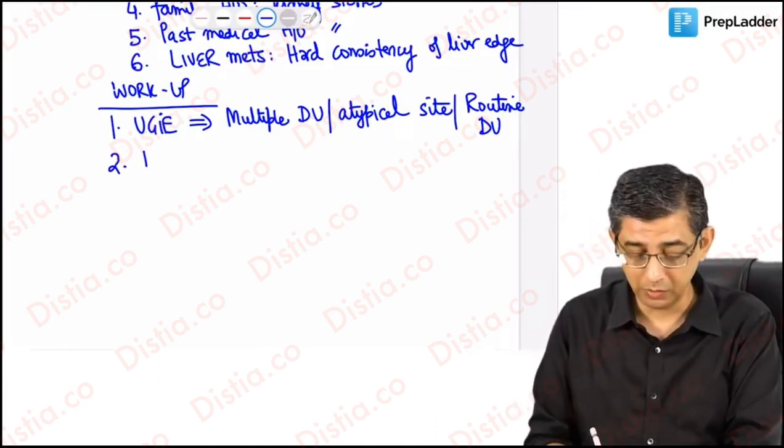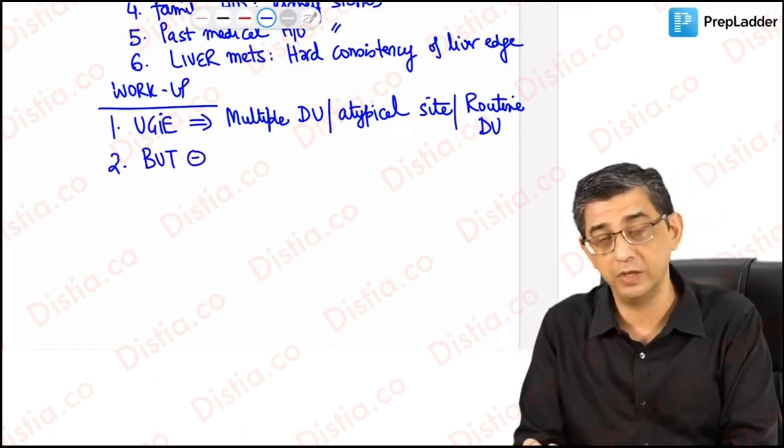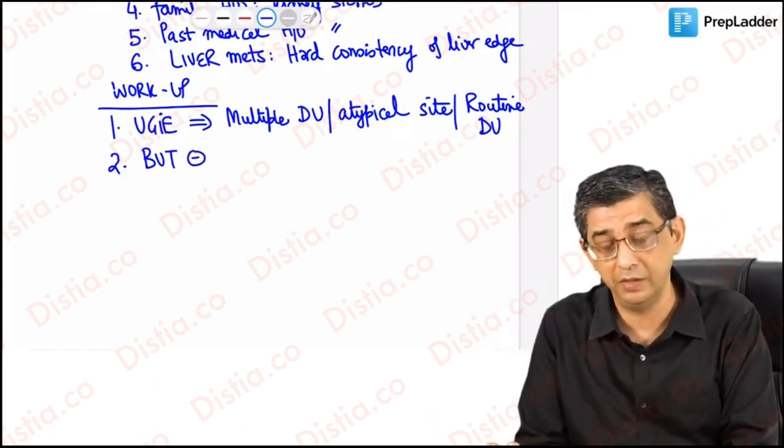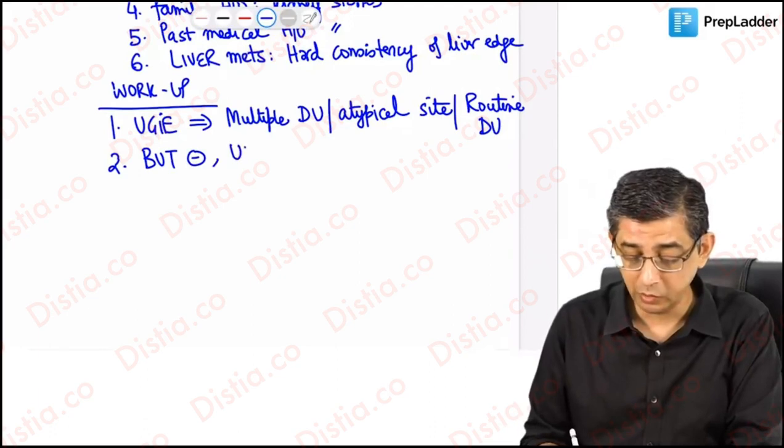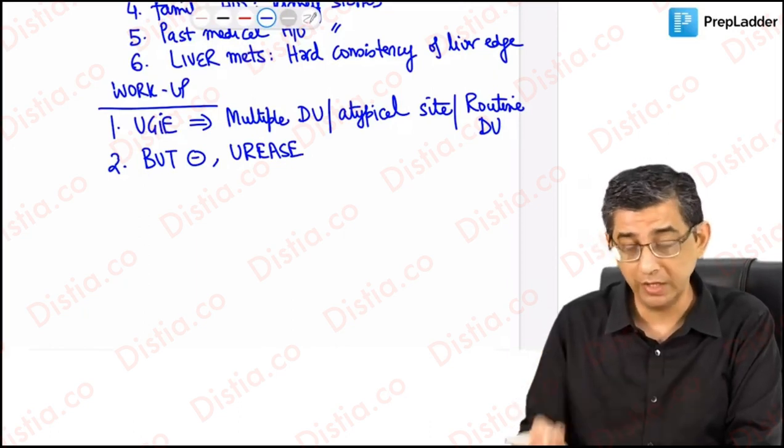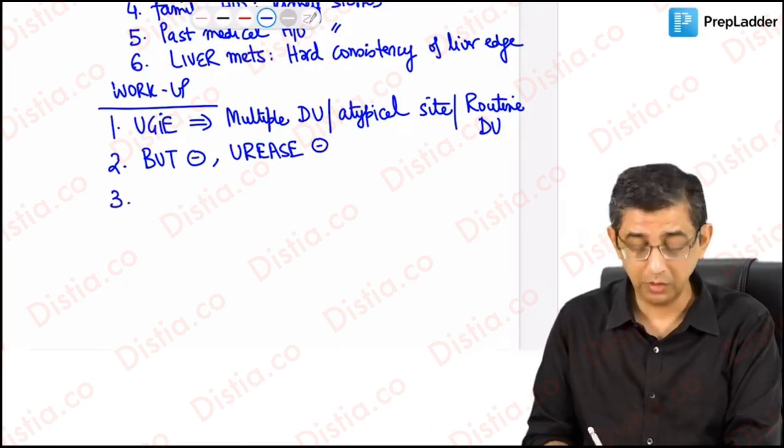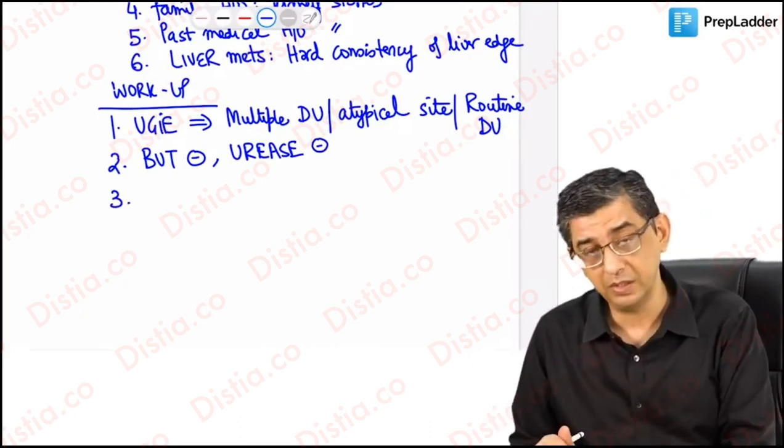Because in India H. pylori is common, I have done a breath urea test. I have written BÜT as breath urea test, which is turning out to be negative. When I did an endoscopy, I also took a scraping of the stomach wall and tested it for CLO test urease, and it turned out to be negative as well. It is important to rule out a concomitant H. pylori infection.